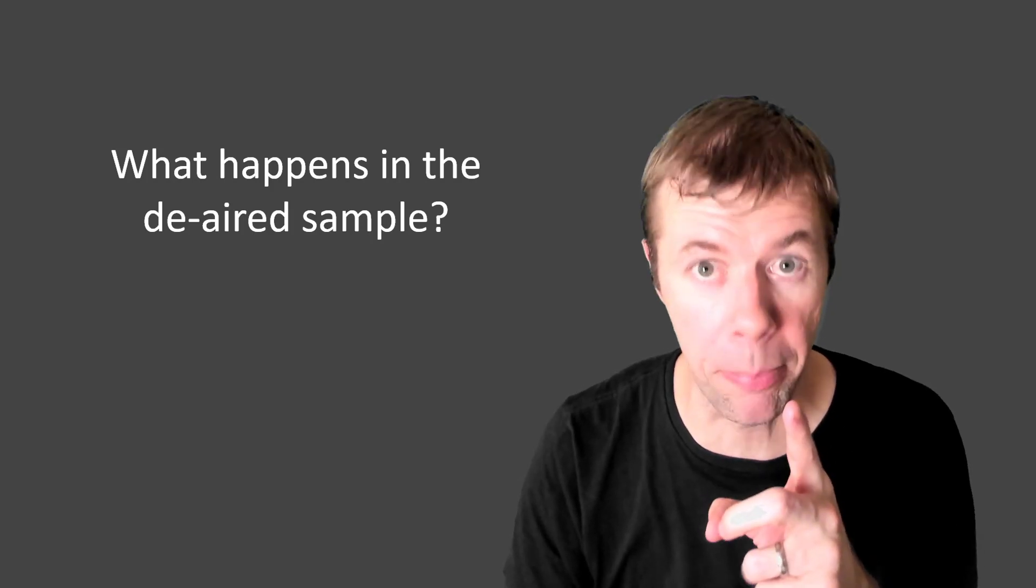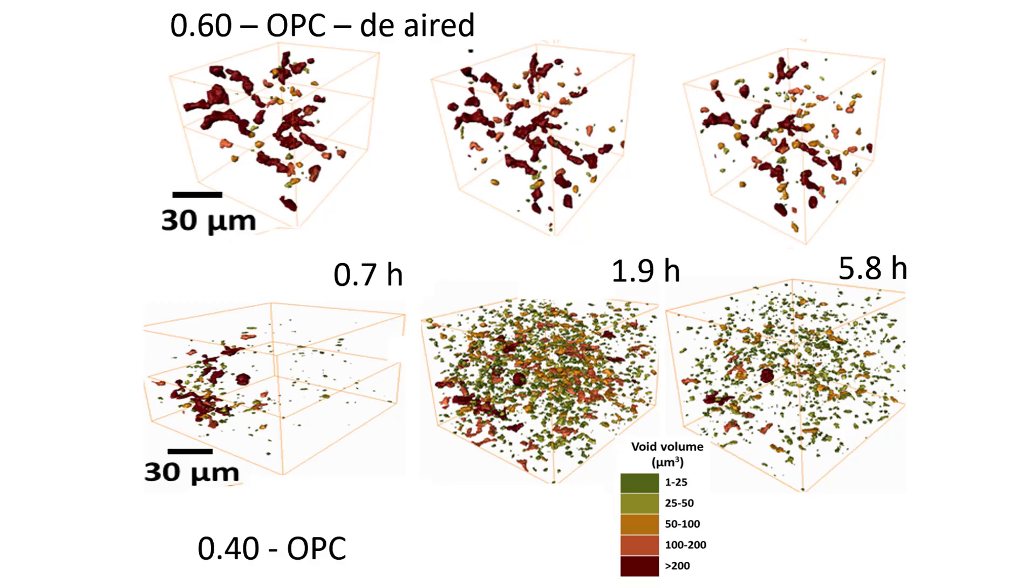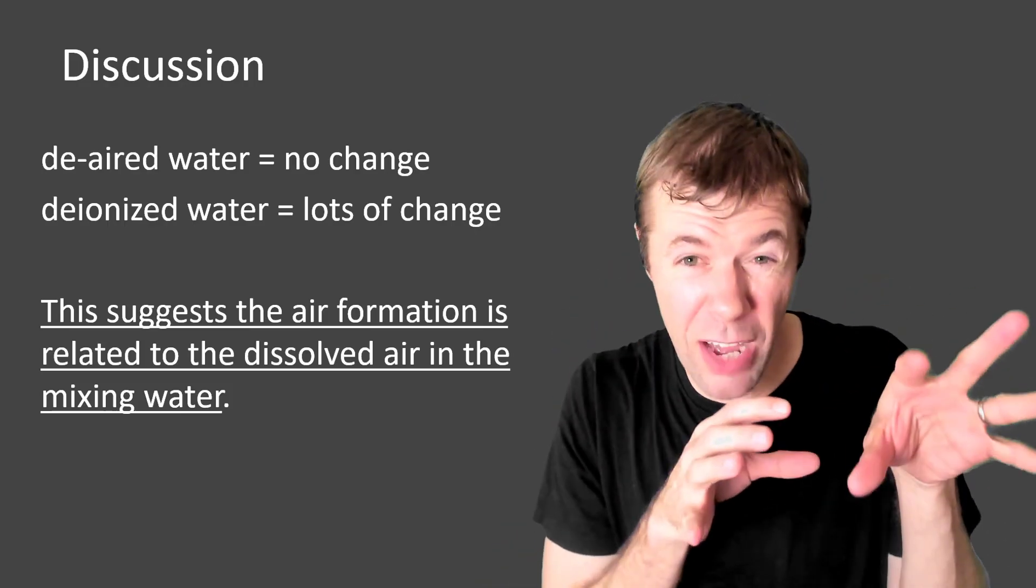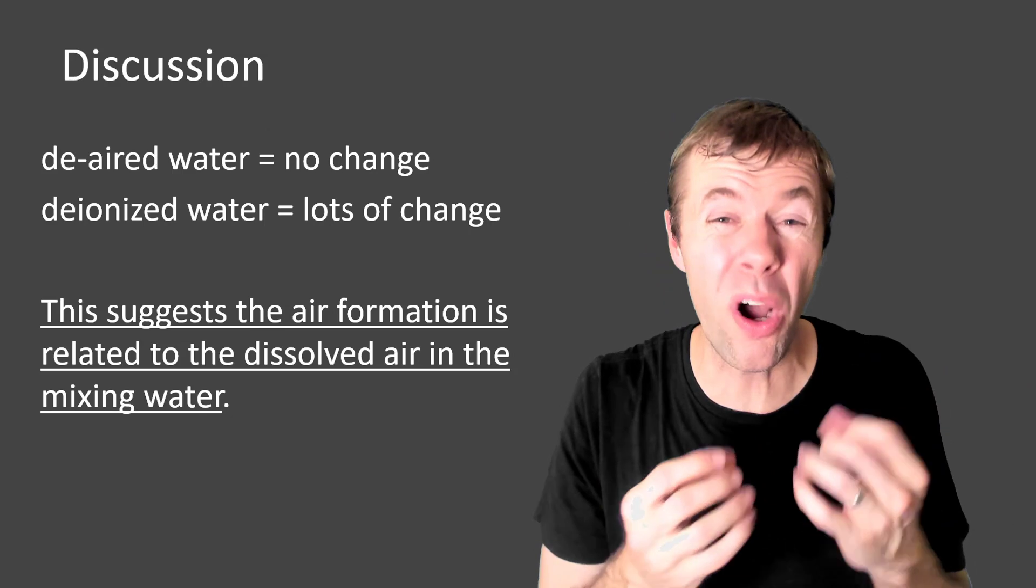So what happens in the de-aired sample? Remember that one I showed you earlier? Well, guess what? In 3D, nothing. Not much at all. I'm showing equivalent time periods between the Portland cement system with non-de-aired water versus the Portland cement system with de-aired water at the top. And we can see here when the magic explosion happens, not much is going on. Later on, when things get smaller, not much is going on. De-aired water changes things. So with de-aired water, we have almost no change. With de-ionized water, lots of change. This suggests the air formation is totally related to the dissolved air in the mixing water.